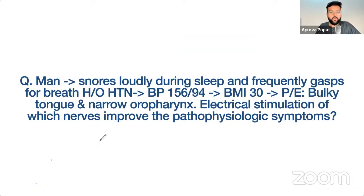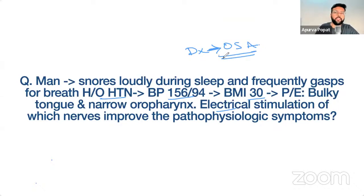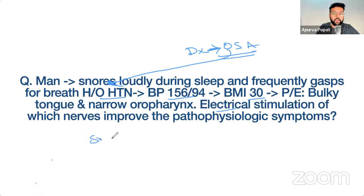A man is complaining of loud snoring during sleep and frequently gasping for breath. He has hypertension with a blood pressure of 150/90, a high BMI, and on examination has a bulky tongue and narrow oropharynx. The diagnosis is obstructive sleep apnea. OSA patients can have hypertension because of intermittent hypoxia, which activates the sympathetic nervous system, leading to systemic hypertension.